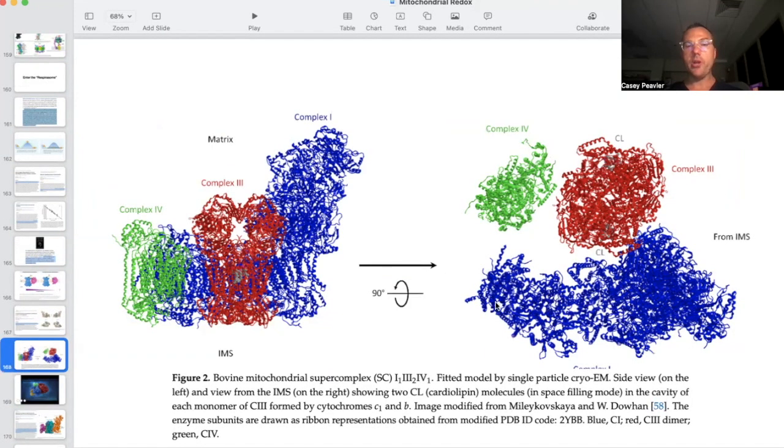This is the complexes separated. This is the complexes put together. Complex one, three, four. Complex two is not shown here. This is one of the complexes that is formed. This is called a supercomplex one, three, four arrangement. There are various mitochondrial supercomplexes depending on type of cell, depending on the need of the cell. And a lot of this is still being discovered.